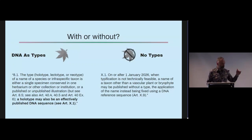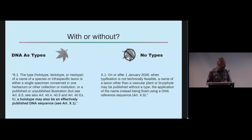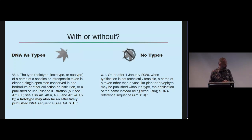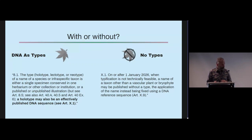We then went through the current Shenzhen Code and looked for all the articles that need adaptation. For the DNA-as-types proposal, we need to add text — for instance, the sentence: 'The holotype may also be effectively published as a DNA sequence. See article X1.' In article X1, it states that this must be a microorganism, or at least believed to be a microorganism based on its sequence. For the no-types proposal, there are different edits to the code, stating that application of the name is instead fixed using a DNA reference sequence, so it has no type.